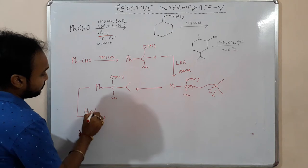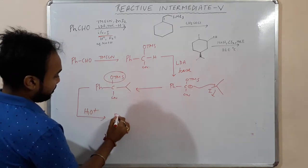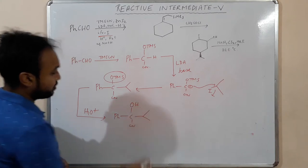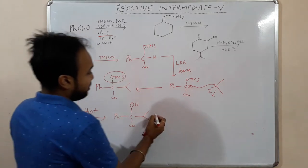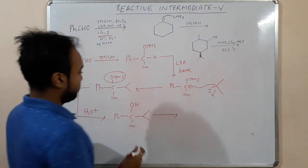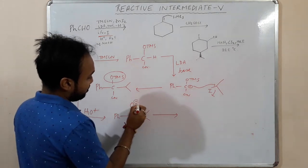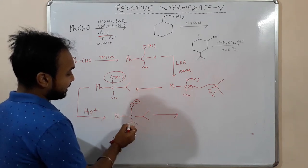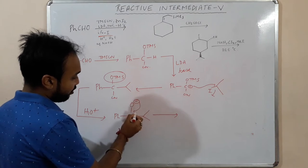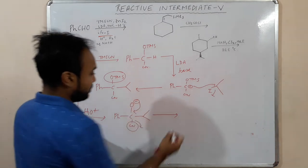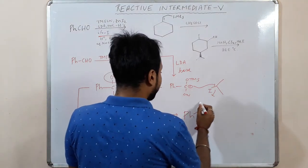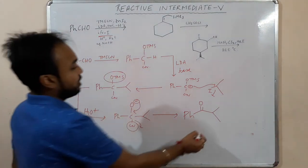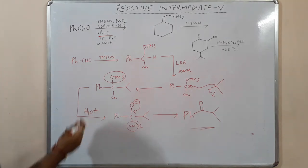Next, H⁺ in water causes hydrolysis, so the OTMS group becomes an OH group. Again we have given a base, so there is proton abstraction. Since cyanide is a good leaving group, the electrons push and cyanide leaves. It's a type of benzoin condensation. This is our product.